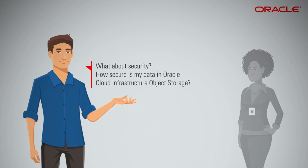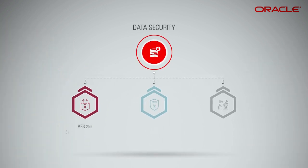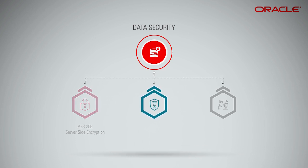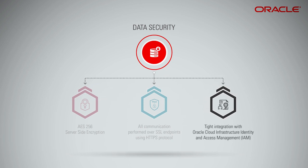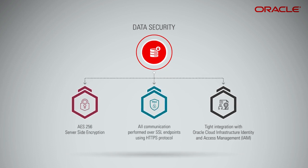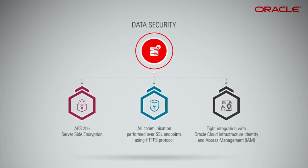Object storage supports server-side encryption. All data stored in object storage is automatically encrypted. Data is uploaded and downloaded over SSL endpoints using the HTTPS protocol. By default, only authenticated users who have explicitly been granted access to specific resources can access data stored in object storage. The service is tightly integrated with Oracle Cloud Infrastructure Identity and Access Management. For an additional layer of security, you can encrypt objects prior to sending them to object storage, giving you total control over both your data and the encryption keys used to encrypt it.